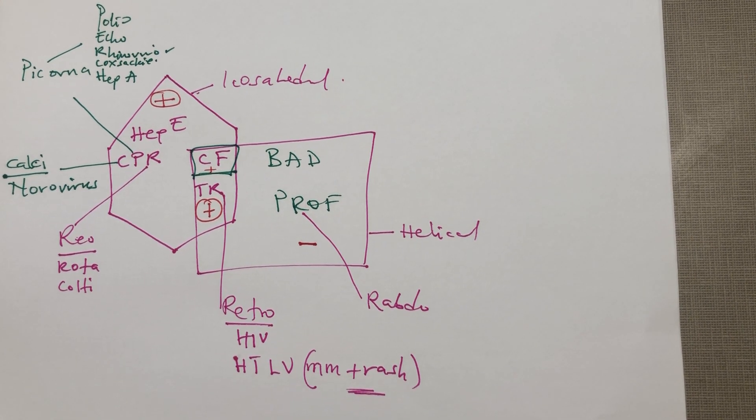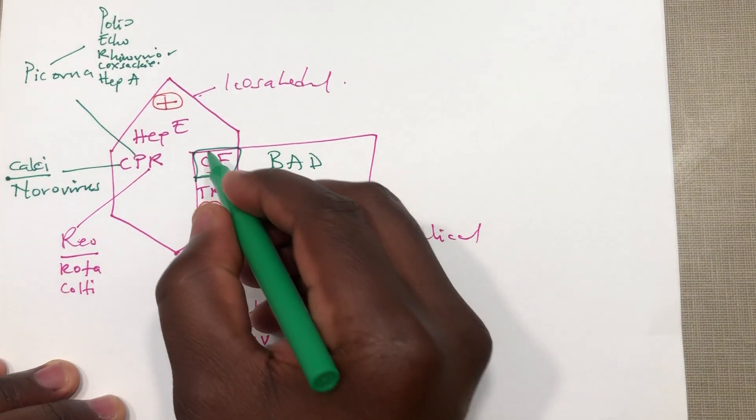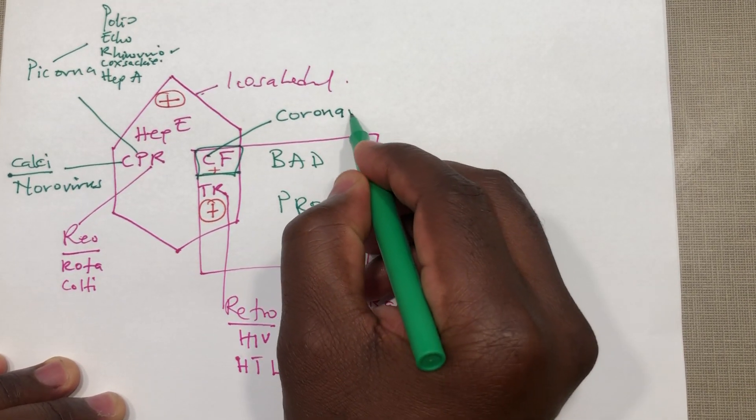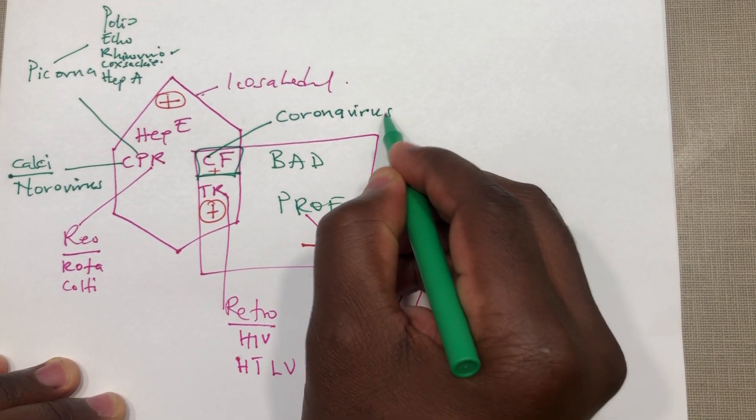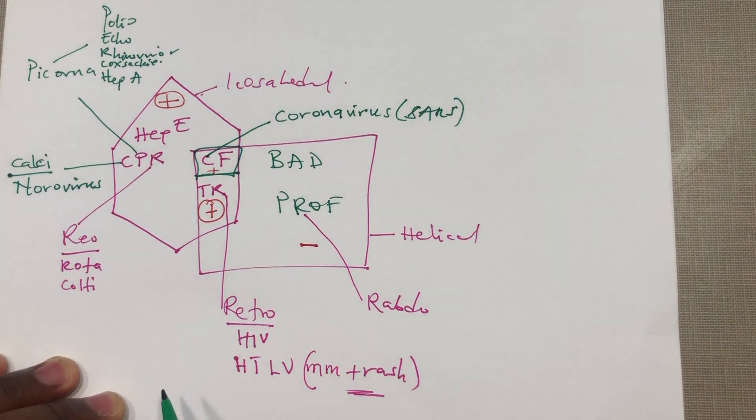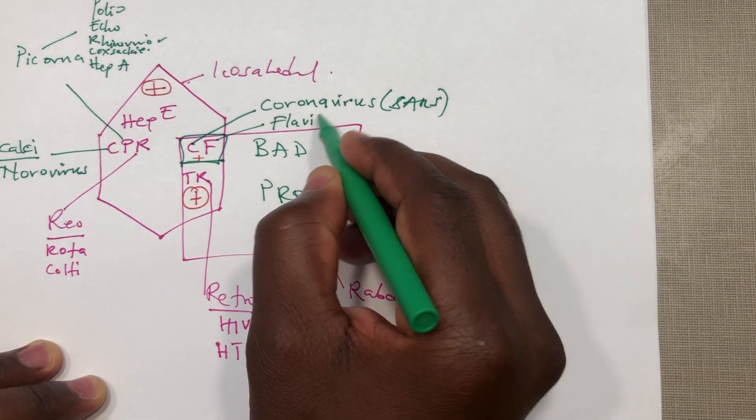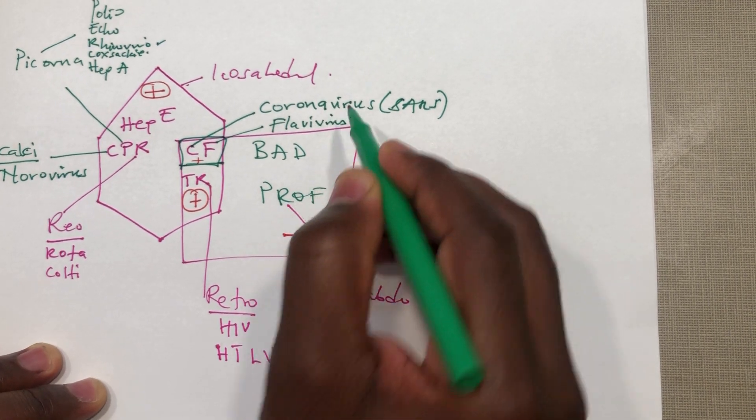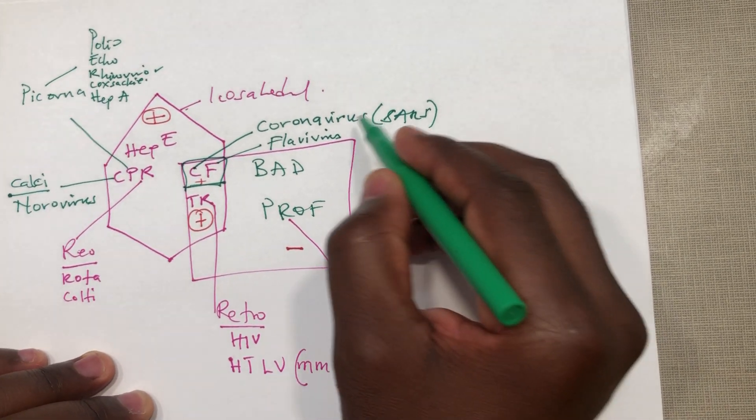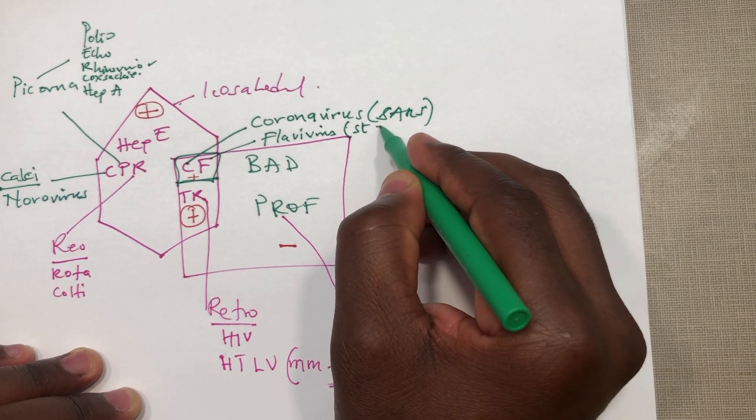The next one is the coronavirus, that's the SARS coronavirus that's causing the COVID-19. Next is the flaviviruses. With the flaviviruses I have a mnemonic: Saint Zika and hep C make DW yellow.